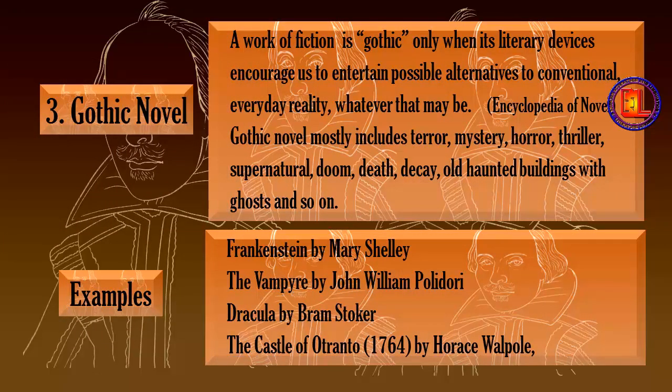Number 3: Gothic Novel. A work of fiction is gothic when its literary devices encourage us to entertain possible alternatives to conventional, everyday reality. Gothic novels mostly include terror, mystery, horror, thriller, supernatural doom, death, decay, and old haunted buildings with ghosts and so on. Examples are Frankenstein by Mary Shelley, The Vampyre by John William Polidori, Dracula by Bram Stoker, and The Castle of Otranto by Horace Walpole.